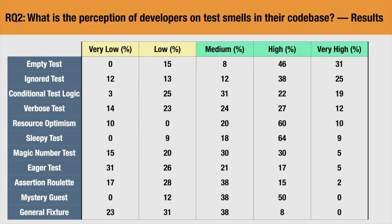Now we move to the results. In this table we can see the maintainability impact of each smell as rated by developers. The ones with the highest impact are: Empty Test — a test that does not contain code or assertions, which returns a green light even though it doesn't actually test anything; Ignore Test — a test that uses the @Ignore annotation, because if the annotation is not followed by a bug ID it is hard to remember why the test was ignored; and Conditional Test Logic — tests with many branches such as if-else or while loops, mainly because the test becomes hard to read and understand. On the other hand, the ones with the least impact are Assertion Roulette — tests containing many assertions without message documentation — Mystery Guest, and General Fixture.